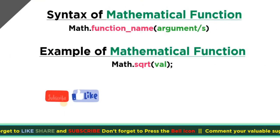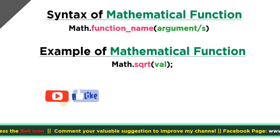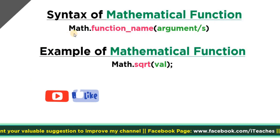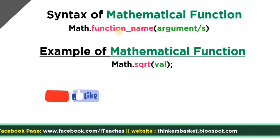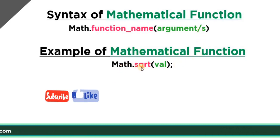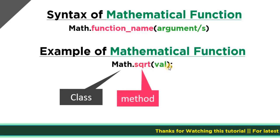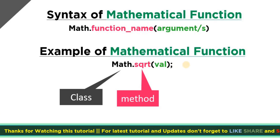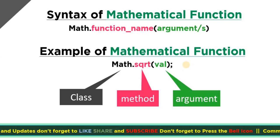Let's see the syntax of a mathematical function. The first thing is to write Math, which is the class, then use a dot operator followed by the name of the function you want to use. After this, we provide the parameter or argument for the function. For example: Math.sqrt(val) — here Math is the class, SQRT is the method meaning square root, and val is the argument or parameter.